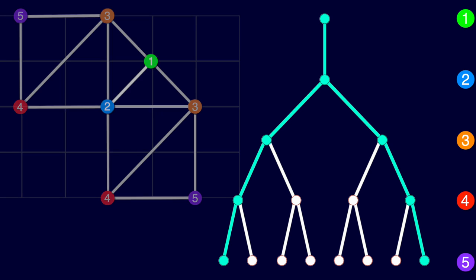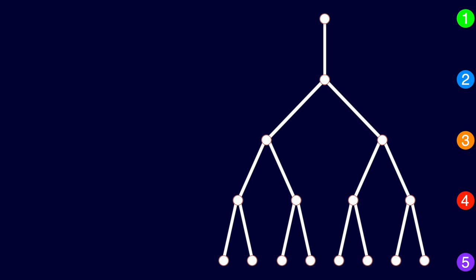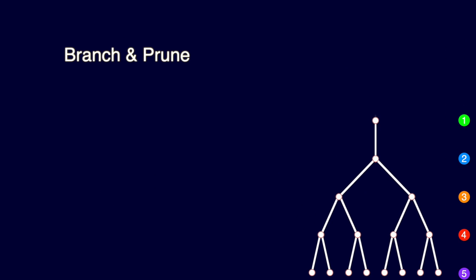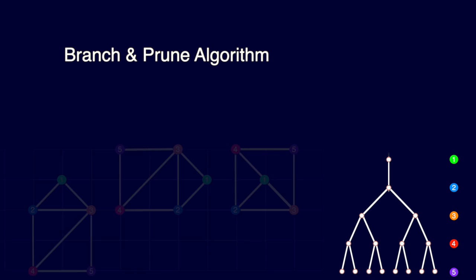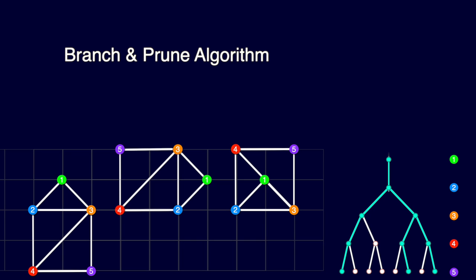The method that we just used to identify each one of the possible solutions is known as the branch and prune algorithm. The name is derived from the binary tree that represents our discrete solution space. Now we know that when we have a discrete instance of the problem, we can use the branch and prune algorithm to find all possible solutions.